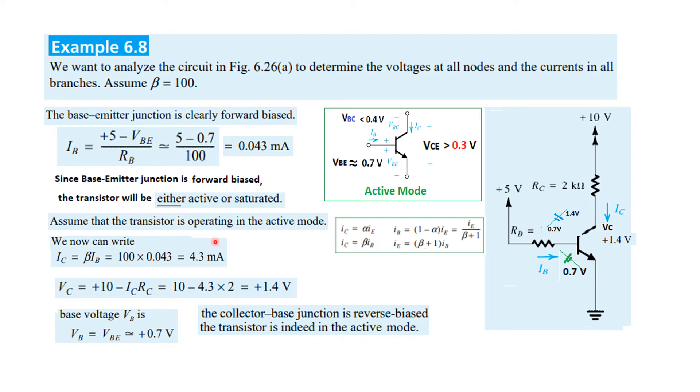The last thing we'll find is IE. We'll use this formula: IE = (β + 1)·IB, so IE is approximately 4.3 milliamperes.